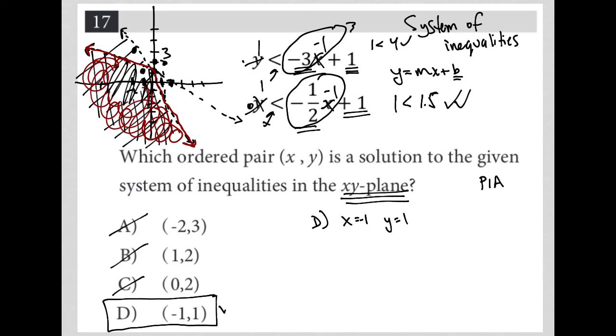So that would be another reason or another way, in fact, a faster way, to figure out that choice D is correct. And just to prove to you that it works for the other answers, if I try choice B, for instance, where x equals 1 and y equals 2, then technically these things should not work. Let me just prove that to you really quickly.